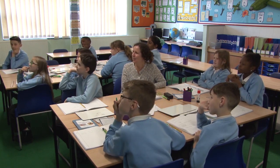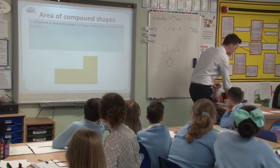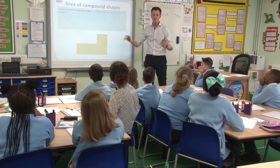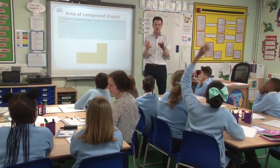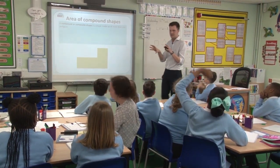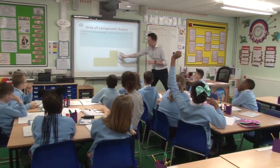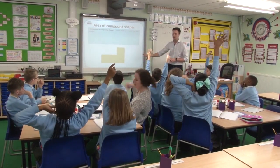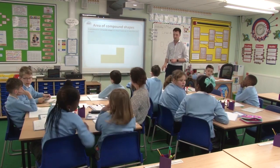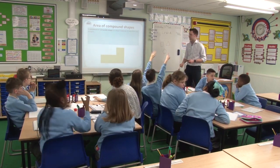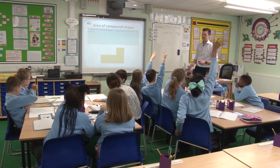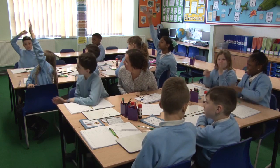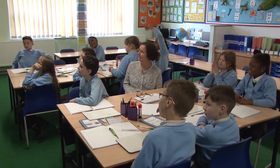A compound shape or composite — there are two words we can use to describe a shape that's made up of more than one polygon. Can anybody spot, like a detective, what two polygons I've used to make my new shape here? Talk to the person next to you. Taylor? A rectangle and a square. Any other ideas?